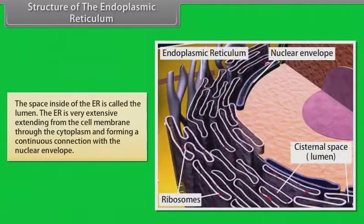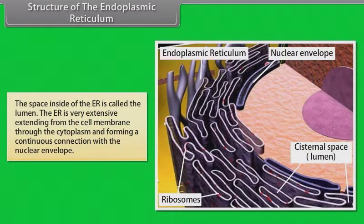The space inside of the ER is called the lumen. The ER is very extensive, extending from the cell membrane through the cytoplasm and forming a continuous connection with the nuclear envelope.